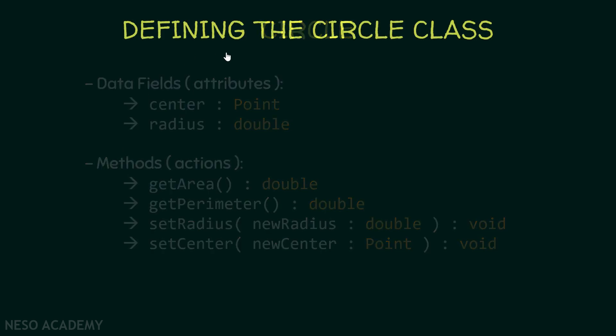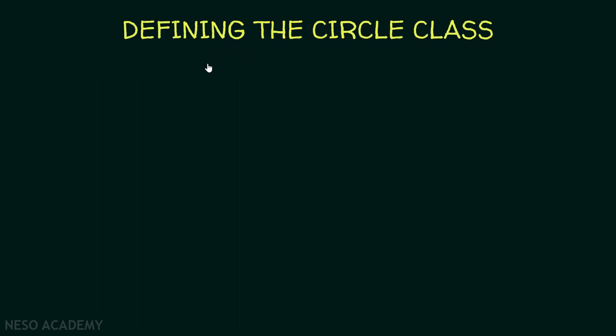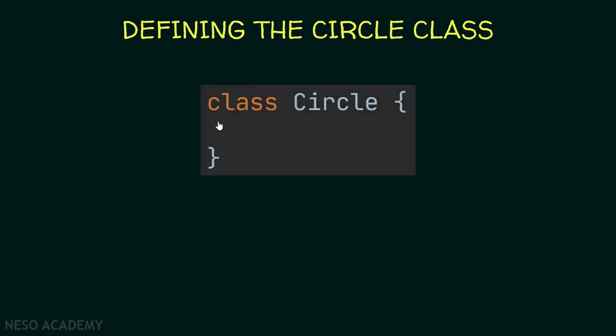Now we know the data fields and the methods that should be defined in our class. The first step is to define the Circle class. We use the class keyword followed by the name of the class. I'm using the Pascal naming convention, so the first letter of each word is a capital letter. Following that, we have a block of code inside which we will define the attributes and methods.